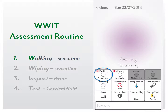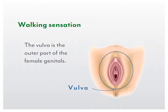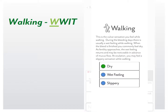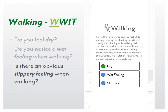Walking sensation. Click on the first tile. You are encouraged to simply become aware of the vulva sensation noticed when walking during the day. The vulva is the outer part of the female genitals, circled in this diagram. During the bleeding days, there is usually a wet feeling while walking. When the bleed is finished, you commonly feel dry for a few days. As fertility approaches, the wet feeling returns and may even be noticeable in advance of mucus flow. At ovulation, you may feel a slippery sensation when walking. Wet feeling and slippery are fertile and are recorded with a blue stamp.